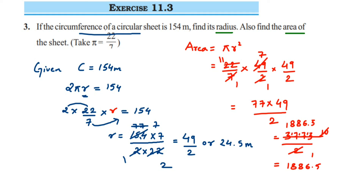The area is 1886.5 square meters — the unit is always in square for area. If you didn't follow the cancellation method, you can use the division method or any other method you prefer. We have found both the radius (24.5 m) and the area (1886.5 m²) of the circular sheet. Drop a comment below if you have any questions. Thank you for watching.